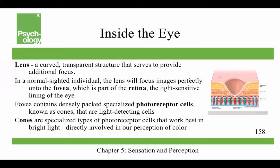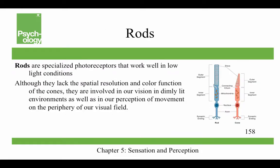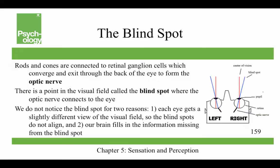The fovea contains densely packed specialized photoreceptor cells known as cones — light-detecting, photosensitive cells. Cones work best in bright light and are directly involved in our perception of color. Rods are specialized photoreceptors that work well in low-light conditions. Although they lack the spatial resolution and color function of the cones, rods are involved in vision in dimly lit environments and in our perception of movement on the periphery of our visual field. So if you want to see something in low-light conditions, it's best to look at it out of the side of your eye.